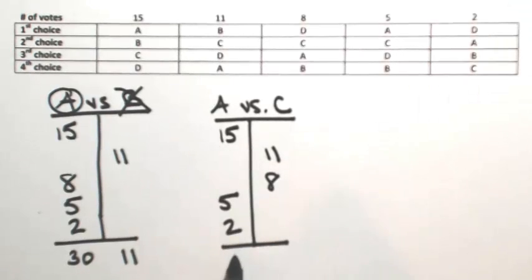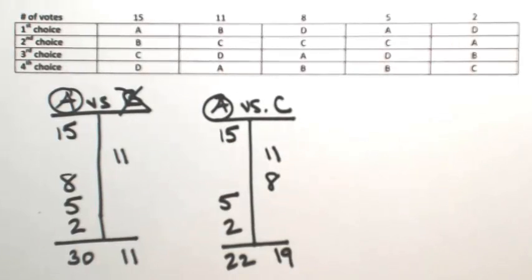So adding up each column, A gets 22, C gets 19, so A is the winner of that competition. So that means that C cannot be the Condorcet winner because you have to beat all of your competitors.